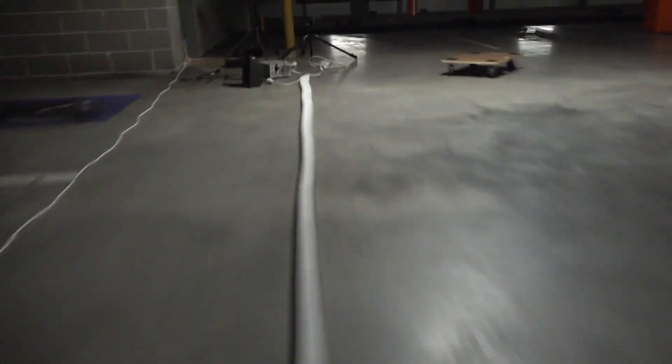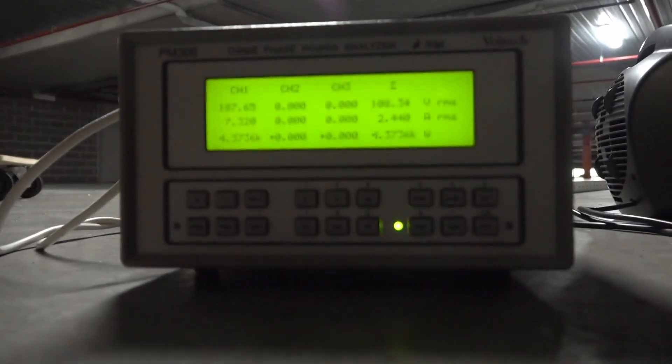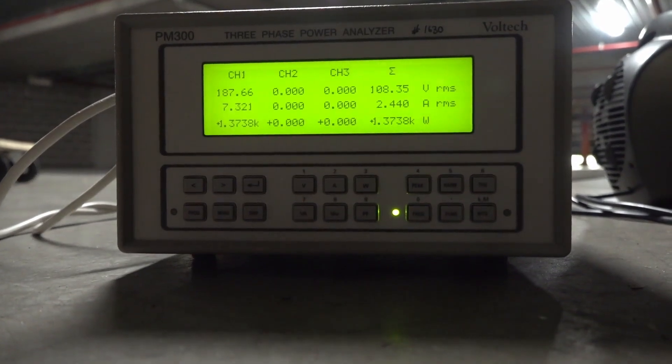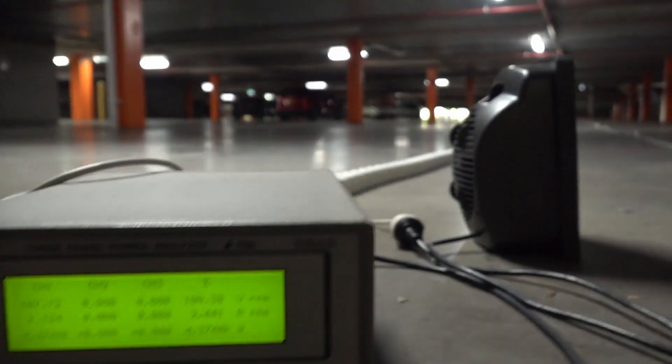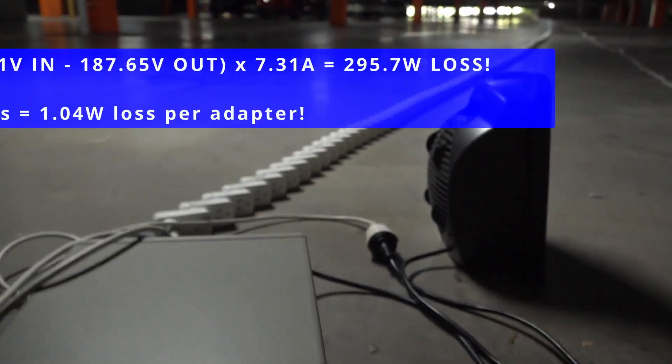So there you go. So we can calculate 228.2. So we can calculate the voltage drop across all those adapters. And we know our current is 7.31 amps. Was the current at the other end? Should be the same. Current in should be current out. So there you go. 1.667 kilowatts. So 7.31 amps. Let's go back.